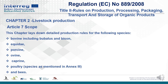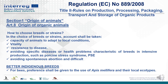In Title 2, Chapter 2, Livestock Production, starting with Article 7, Scope: this chapter lays down detailed production rules for the following species: bovine including bobolous and bison, equidae, porcine, ovine, caprine, poultry species as mentioned in Annex 3 of Regulation 889/2008, and bees. Continuing Title 2, Rules of Production, Processing, Packaging, Transport and Storage of Organic Products. Section 1: Origin of Animals. Article 8: Origin of Organic Animals.